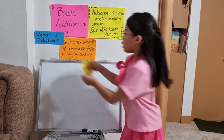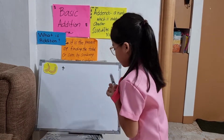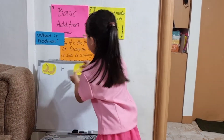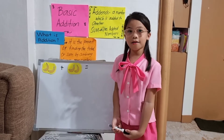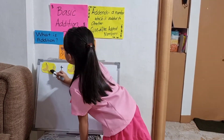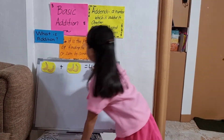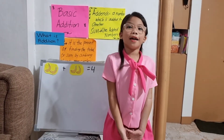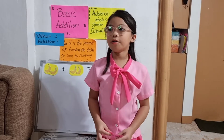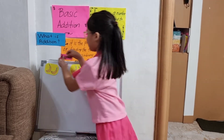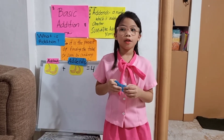For example, I have here two bananas plus two bananas. Let's count: one, two, three, four. So the answer is four. Very good class. Can you guess where are the addends and the sum? Here are the addends, and the answer we get is called sum.